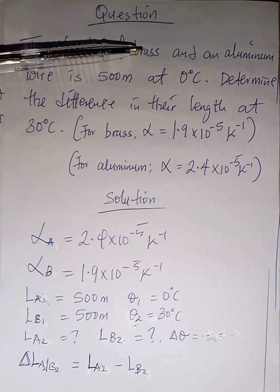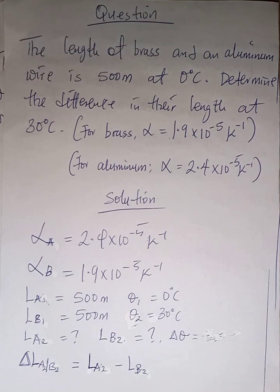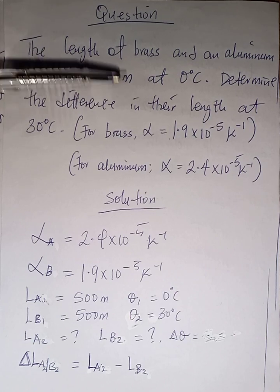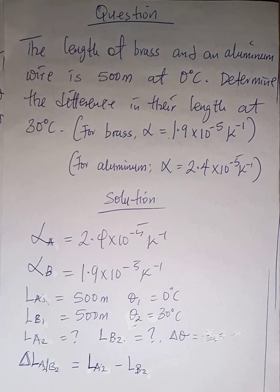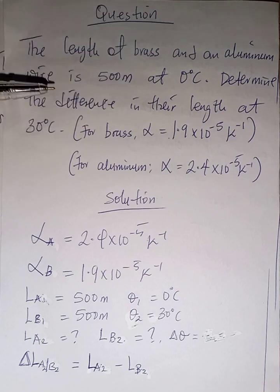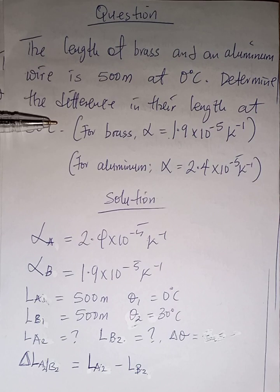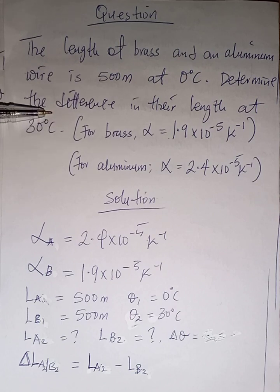The length of a brass and an aluminium wire is 500 meters at zero degrees Celsius. Determine the difference in their lengths at 30 degrees Celsius. That's the question — now what are they trying to find?